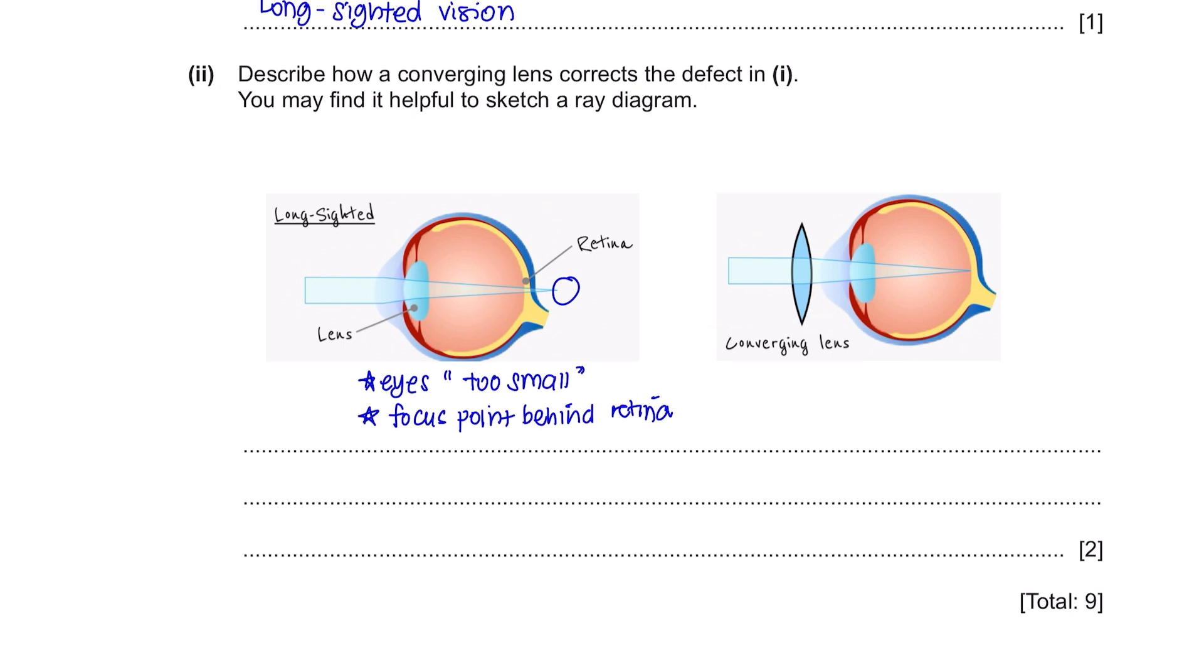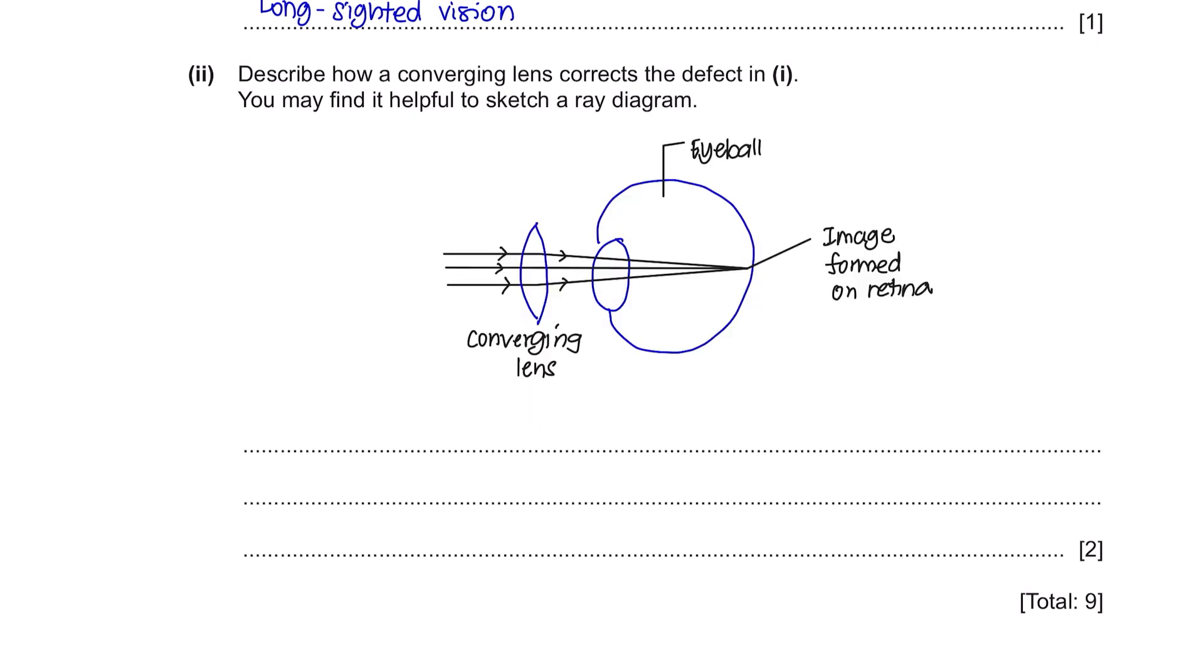How can this be done is that as you can see here, converging lens can reduce the focal length of the eye so that the ray will converge and will focus on the retina. You can just sketch a simple diagram like this with labeling the converging lens and where the image is formed which is on the retina and provide a simple explanation.